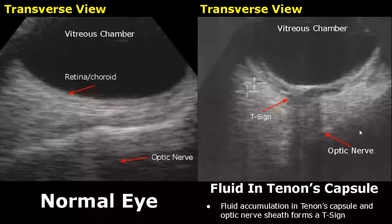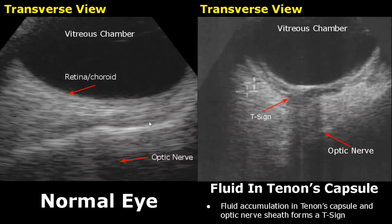Tenon's capsule is a dense layer of connective tissue surrounding the eyeball. If there is fluid accumulation in the Tenon's capsule and the optic nerve sheath, it will give a T sign.